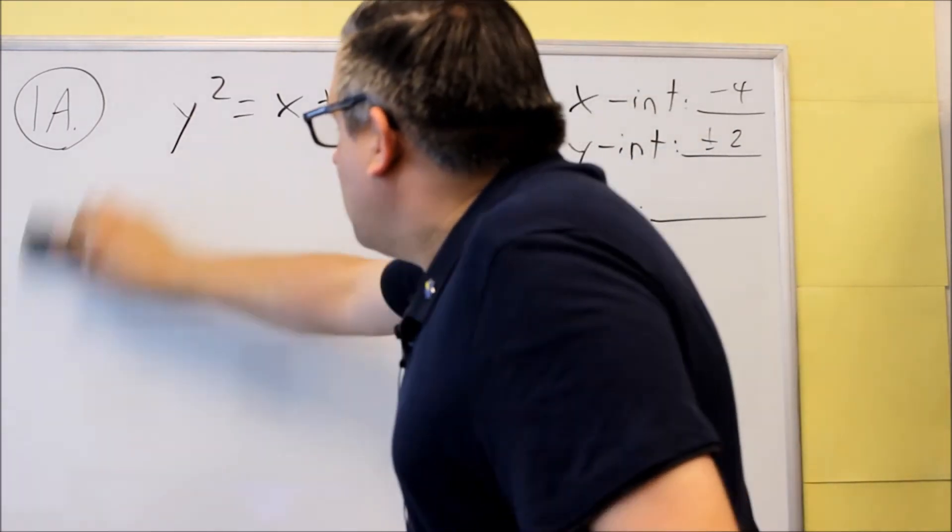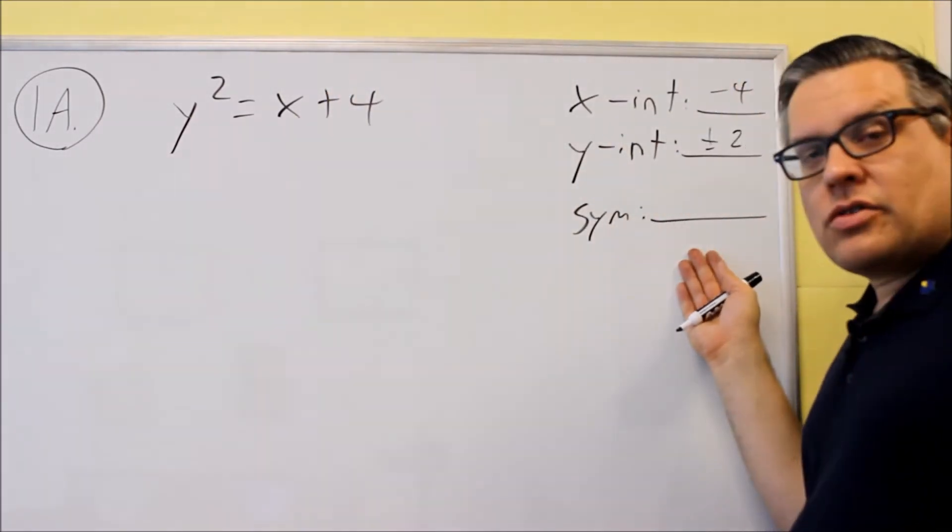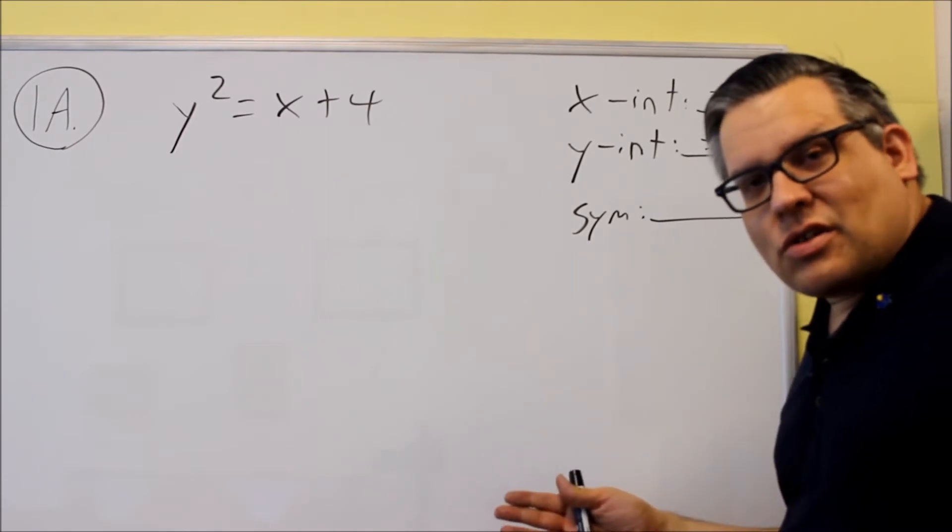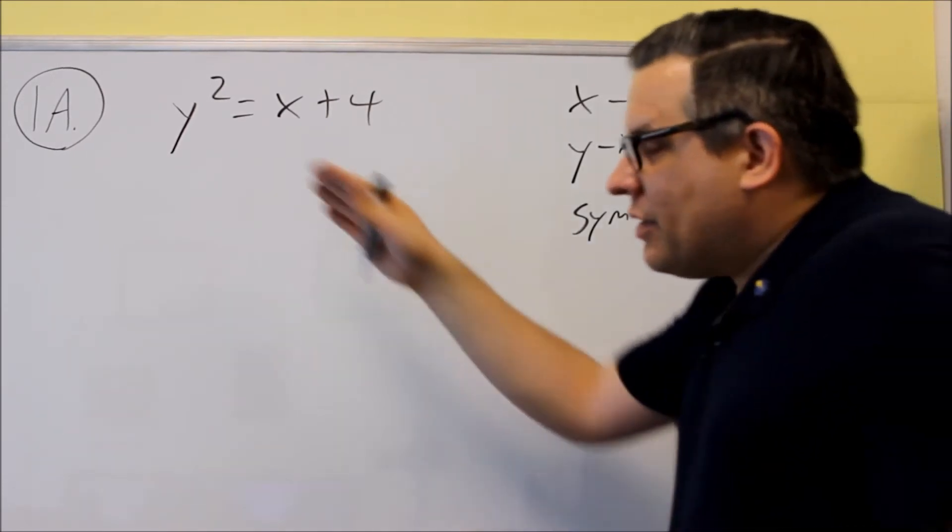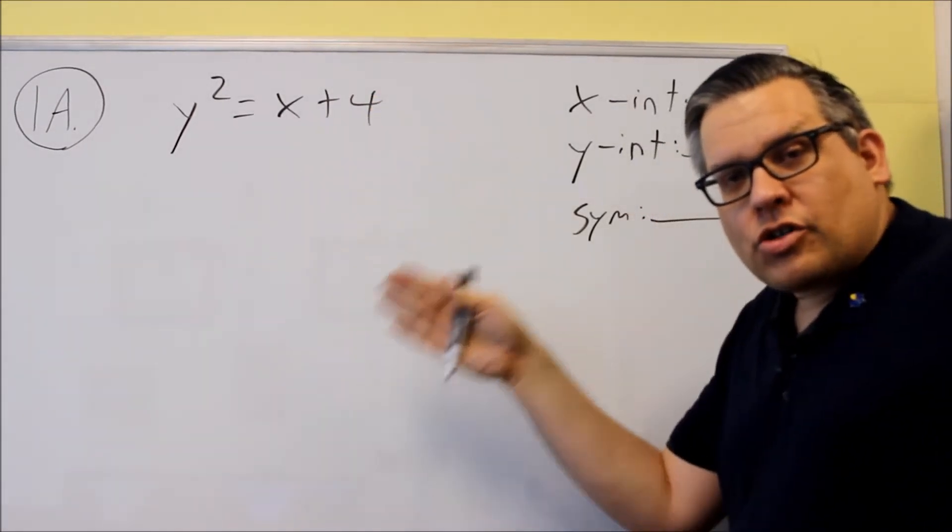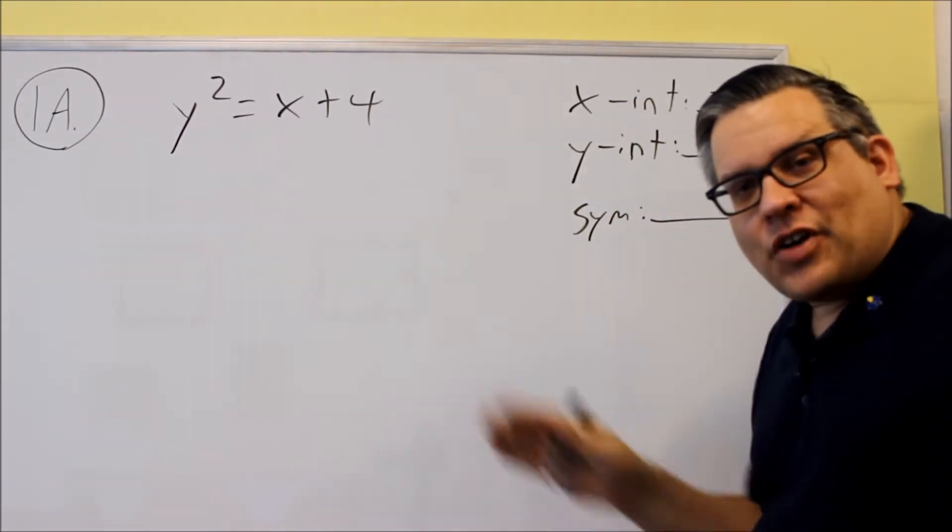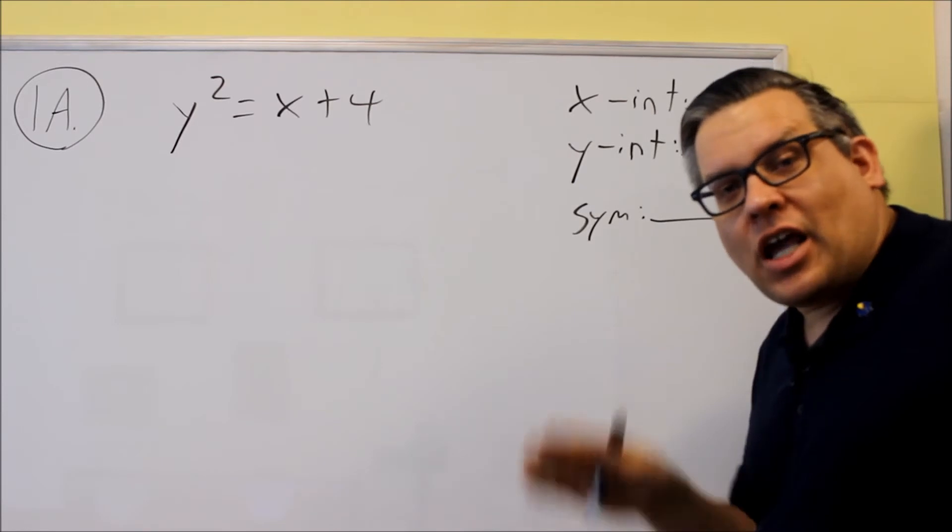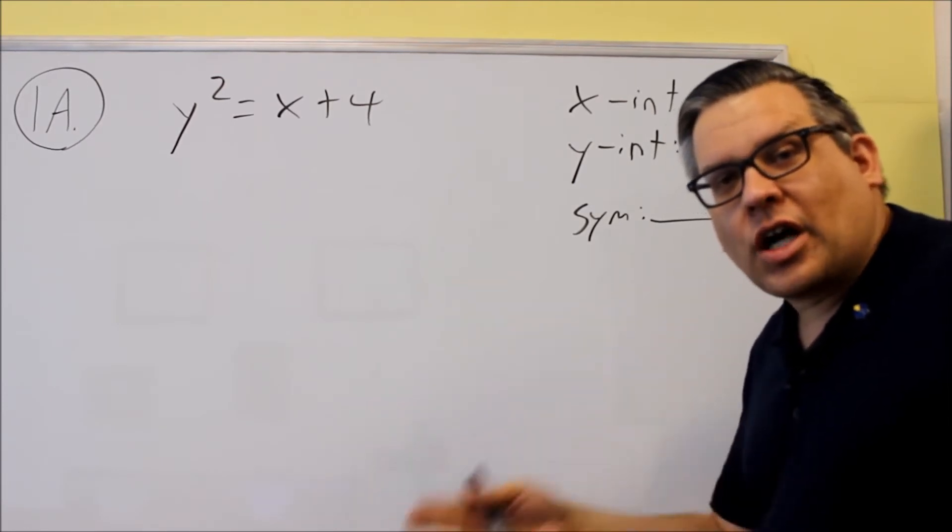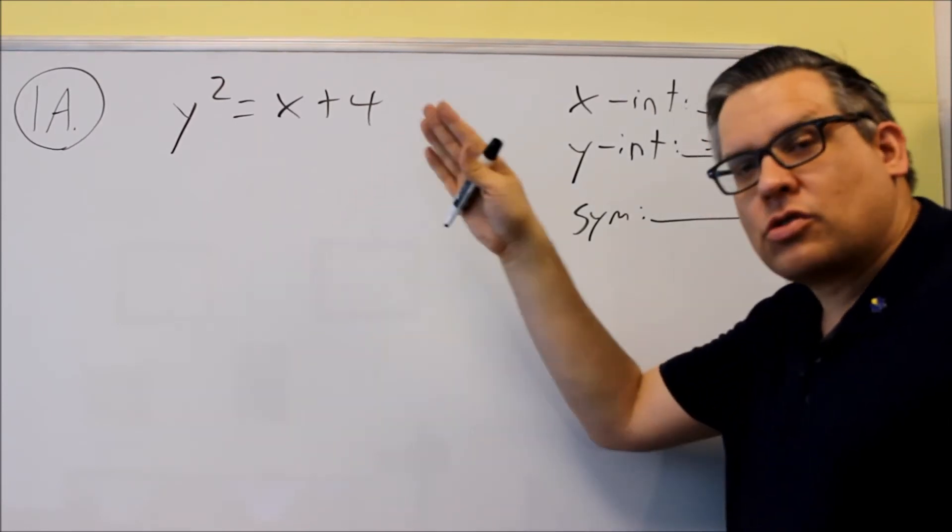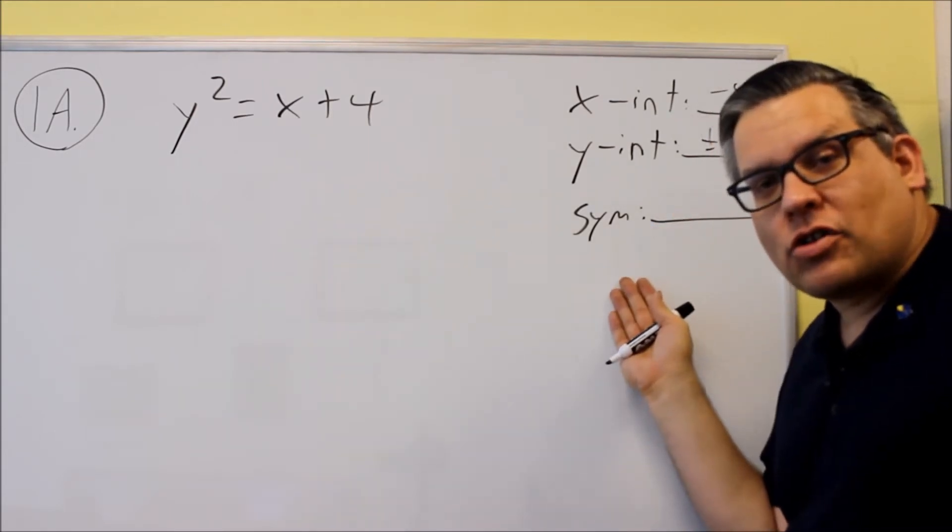The second step, the second part it asks you for is the symmetry. Now when you do this on the test, it's very important that you label your work showing which of these that you're testing. If I just see some random things on there and I can't make out your work what you're actually doing, I'm going to take off points.